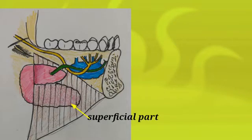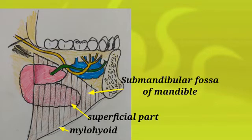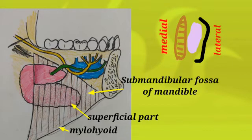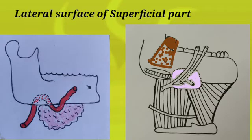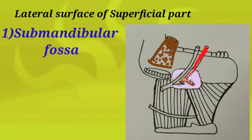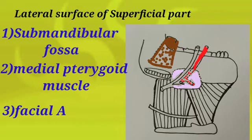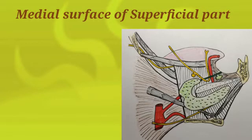The superficial part of the gland is present between the mylohyoid muscle and the submandibular fossa of the body of the mandible. So the superficial part is medially related to the mylohyoid muscle and laterally related to the submandibular fossa of the mandible. Posterior to the submandibular fossa, the medial pterygoid muscle — one of the muscles of mastication — is getting inserted into the inner surface of the ramus of the mandible. Also the facial artery, present at the posterior end, winds around the lower border of the mandible to enter into the face. Hence the lateral surface is related to the submandibular fossa of the mandible, the medial pterygoid muscle, and the looping of the facial artery.